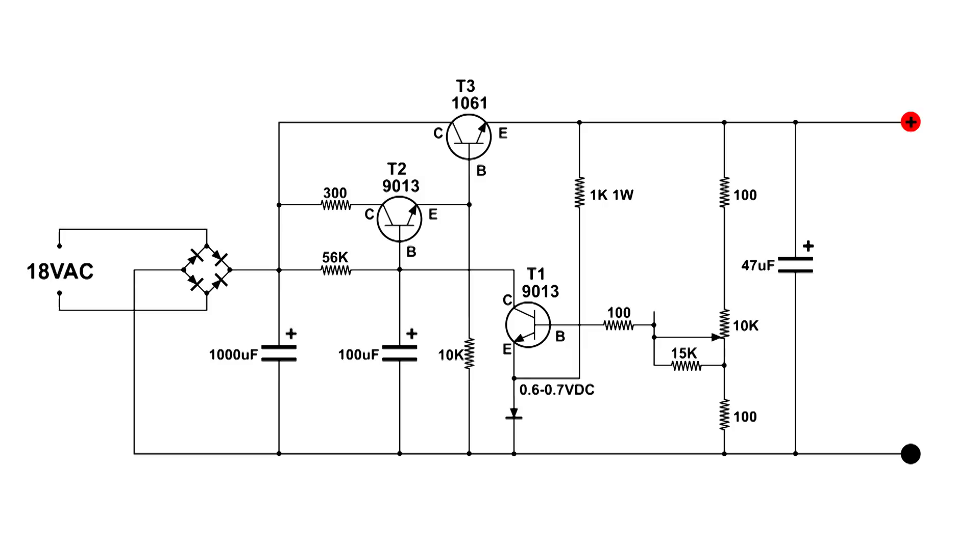Now let's take a look at the variable resistor. I've got it turned all the way to ground, actually 100 ohms above ground, and that 15K ohm resistor is pretty much just shorted out.